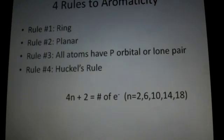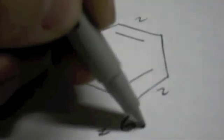So for example, when we look at this cyclohexane ring, we can see that there are one, two, three double bond carbons, meaning that for each double bond we count two electrons. So we have two electrons here, two electrons there, and two here — a total of six electrons.